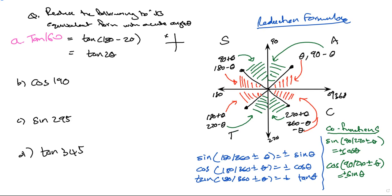Negative tan(20°). That's 20, which is the reduced form. So what have I done? I've reduced the function - the trig function - into its equivalent form with an acute angle.